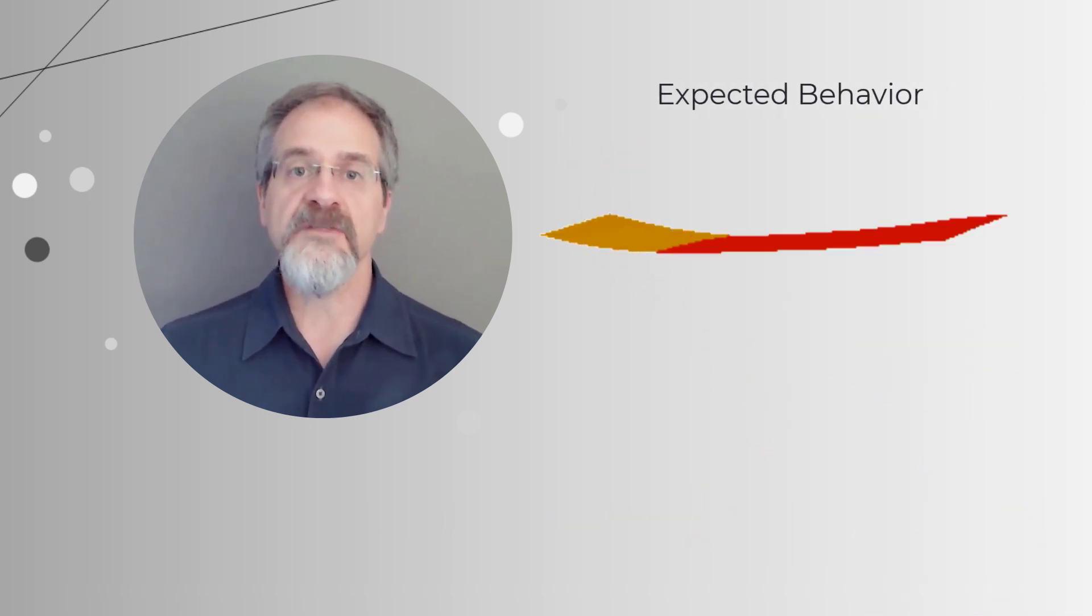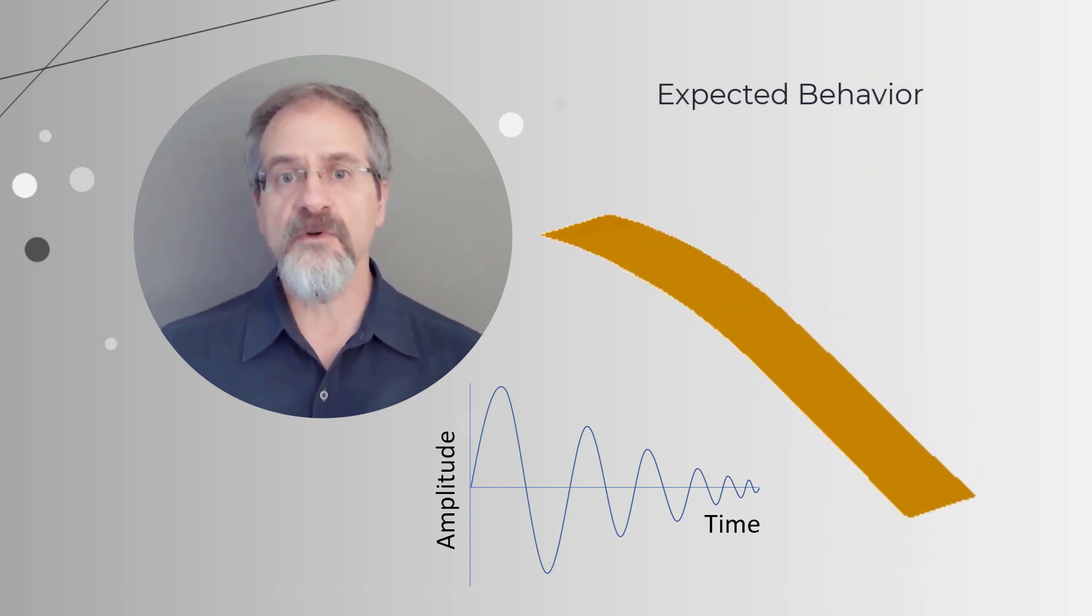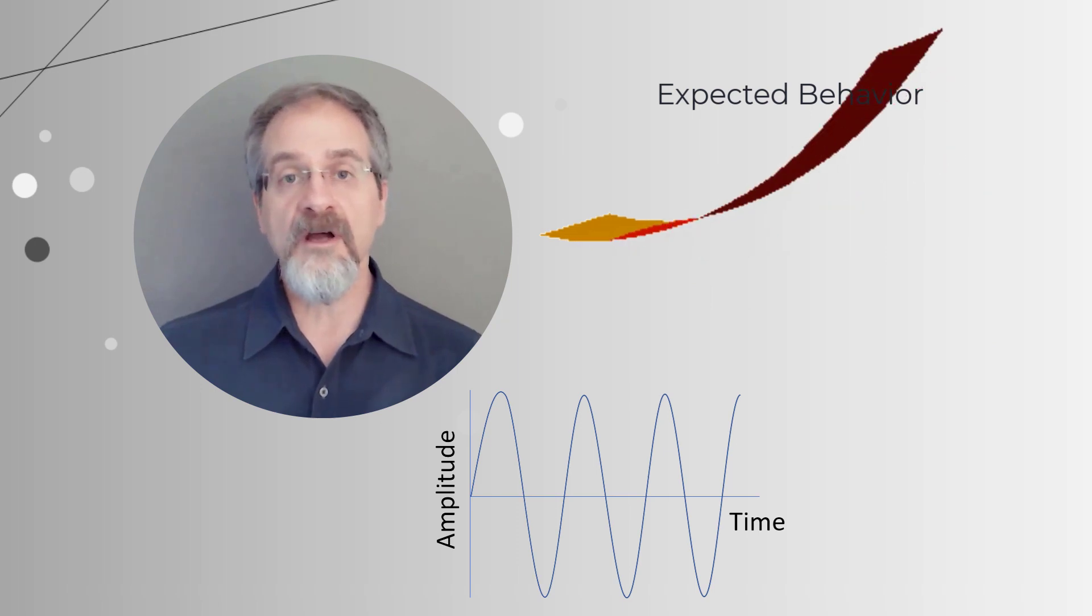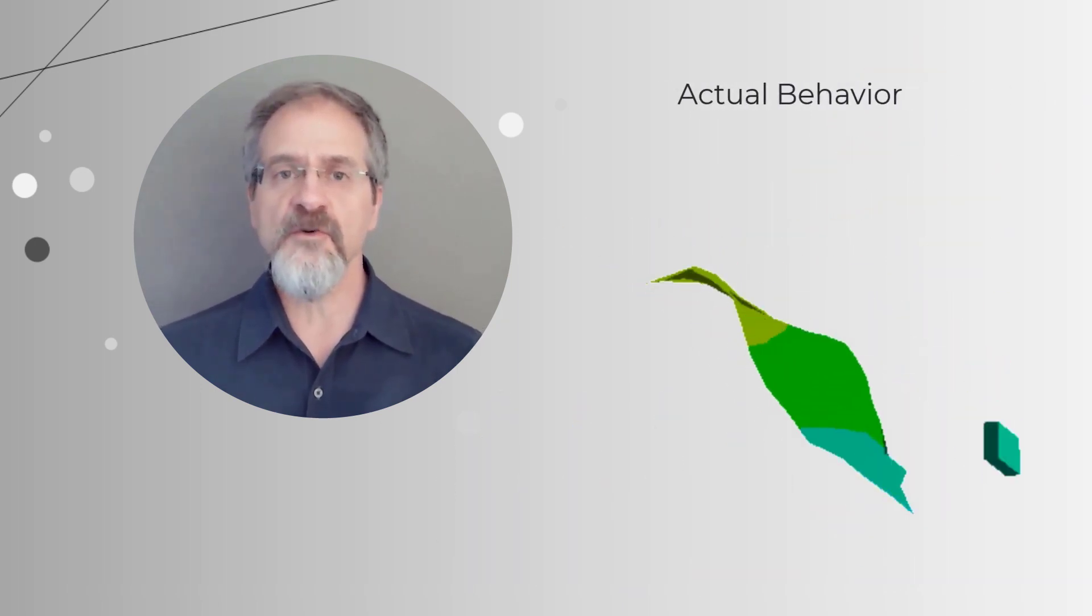Intuitively, we expect the plate to vibrate with a decreasing amplitude. If we consider a case where there is no damping due to air friction, we expect it to vibrate with a constant amplitude. Why does this plate exhibit unphysical behavior then?